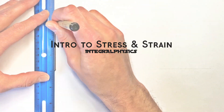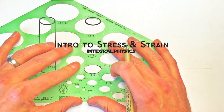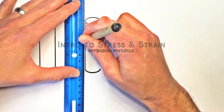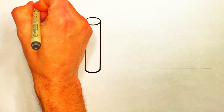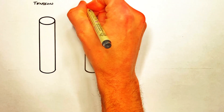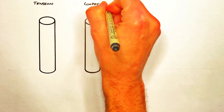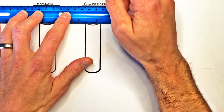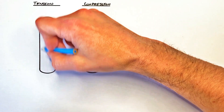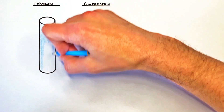Alright YouTube, today we're talking about mechanical stress and strain. And to do that, I want to take a look at two different rods, one which is under tension, the other which is under compression.